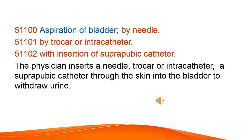Aspiration of bladder by needle, by trocar or intracatheter, with insertion of suprapubic catheter. The physician inserts a needle, trocar, or intracatheter — a suprapubic catheter — through the skin into the bladder to withdraw urine.